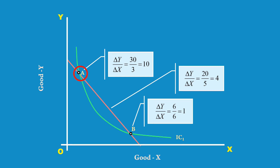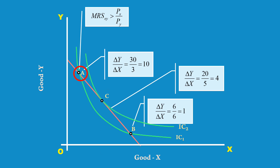Go to point A and compare the marginal rate of substitution of X for Y with the price ratio. The marginal rate of substitution of X for Y is 10, and the price ratio is 4. At this point, marginal rate of substitution is greater than the price ratio, so the consumer cannot be in equilibrium. He substitutes X for Y and moves down. At last, he reaches point C where indifference curve 2 is tangential to the price line. At point C, the price line itself becomes a tangent to IC2; hence, marginal rate of substitution of X for Y equals the price ratio, and the consumer is in equilibrium.